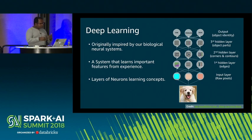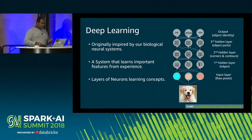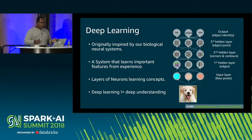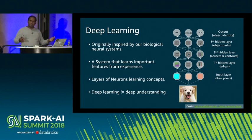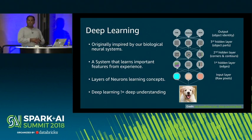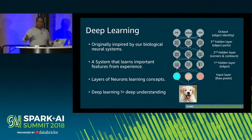Finally, you have the output layer trying to map your image into one of the predefined categories, giving you a probability score. If this network is trained very well and you feed an image of a dog, you'll get a very high score on that. One thing to note: the word 'deep' in deep learning doesn't mean it's gaining a deeper understanding. Instead, it means the number of layers in the neural network is really, really large.